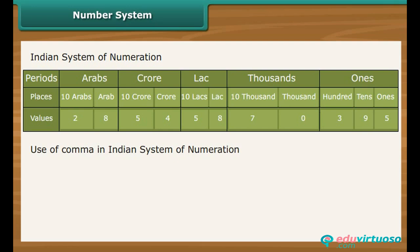Commas are used to mark thousands, lakhs, and crores. The first comma comes after the hundreds place, three digits from the right, and marks thousands.